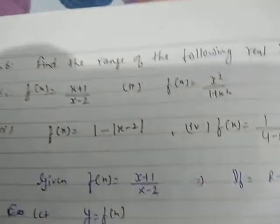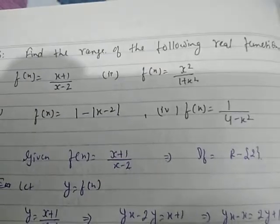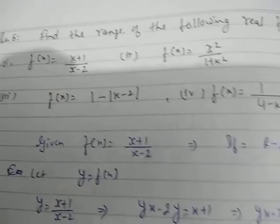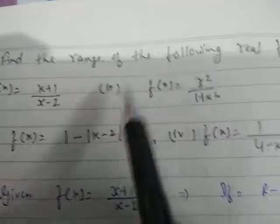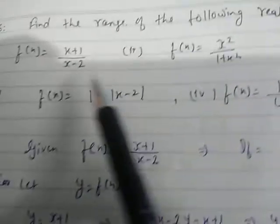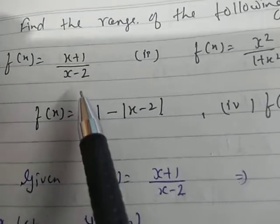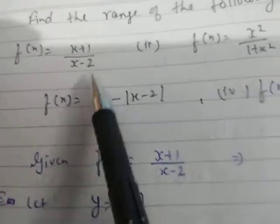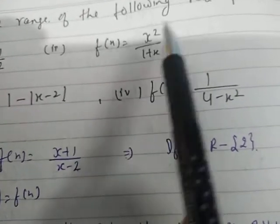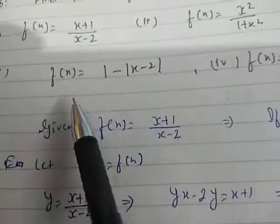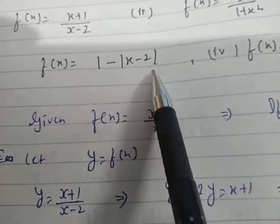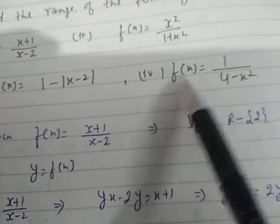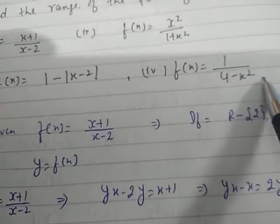Now, here children, I am going to explain some more questions based on finding the domain and range of real functions. The next part of the question is: find the range of the following real functions. The first function is f(x) = (x+1)/(x-2). Second is f(x) = x²/(1+x²). Third is f(x) = 1 - |x-2|. And the fourth one is f(x) = 1/(4-x²).